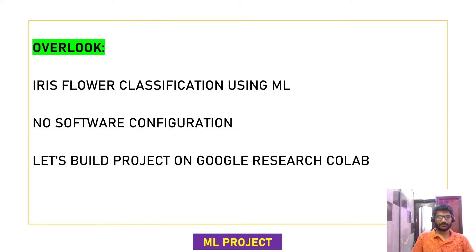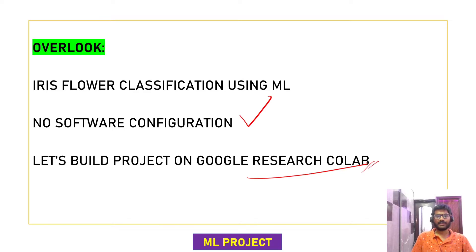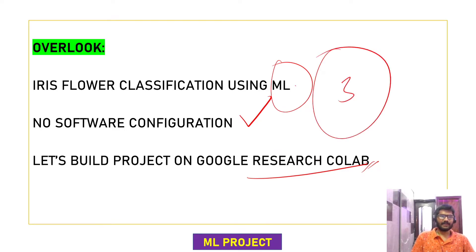Hey guys, a big welcome to our YouTube channel. Today we are going to build a machine learning project — a beginner project using Google Colab. The best part about this video is that no software installation or configuration is required because we are going to run it on Google Colab, so just a browser like Chrome is required. This is an Iris flower classification project using three different algorithms.